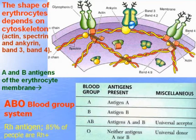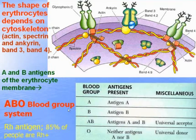On the outer surface of the plasma membrane there is glycocalyx, and it is responsible for the antigen properties of erythrocytes. In particular, it contains AB antigens responsible for the ABO blood group system. If glycocalyx contains antigen A it will be group A, if antigen B — blood group B, if both AB antigens — AB group, if no antigens — O blood group.